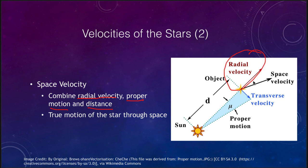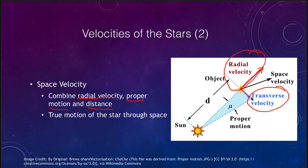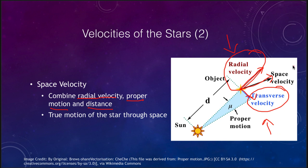The radial velocity — whether a star is moving toward or away from us — can be measured directly by the Doppler effect. The transverse velocity is measured by proper motion and combined with distance to give us the transverse velocity component. Adding the radial and transverse velocities together gives us the true space velocity. The radial velocity is much easier to obtain; the transverse velocity can require comparing images decades or even a century apart to see how the star has moved.